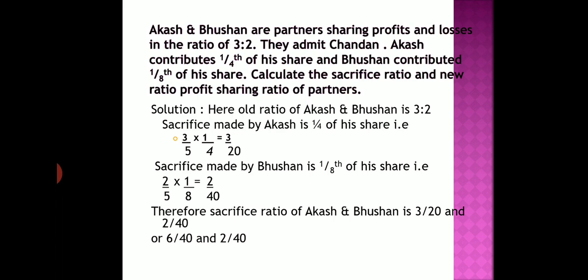This profit which is to be given to Chandan should be contributed by Akash and Bhushan. Because after admission of Chandan, the profit share of Akash and Bhushan obviously reduces. So how much is Akash contributing to Chandan and how much is Bhushan contributing to Chandan? Please observe the sentence carefully. Akash contributes one fourth of his share — that means whatever profit Akash is getting, of that one fourth share he is giving to Chandan. Similarly, Bhushan is contributing one eighth of his share, meaning Bhushan gets two by five share and of that he is giving one eighth to new partner Chandan. The question asks you to calculate the sacrifice ratio and the new ratio.